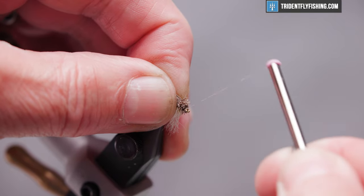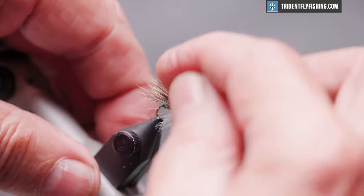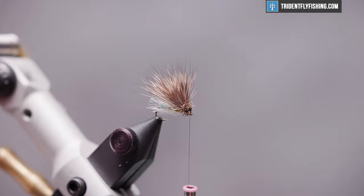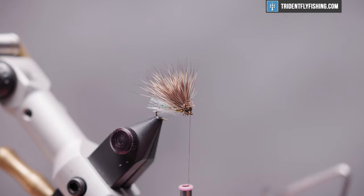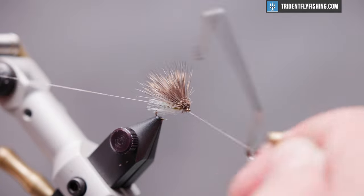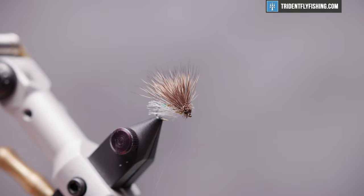Advance our thread up to the eye, a few turns to lock everything in. Take our whip finish tool, a four or five turn whip finish.